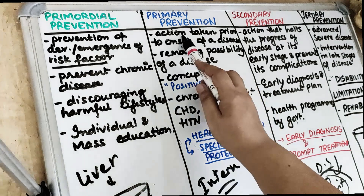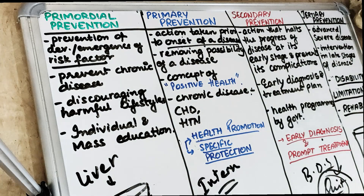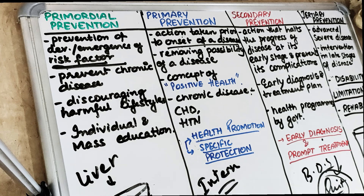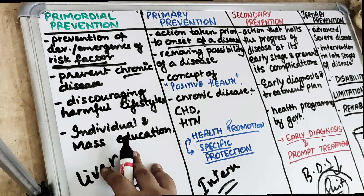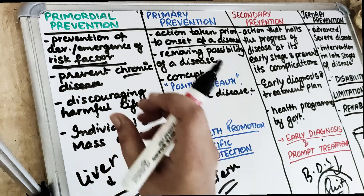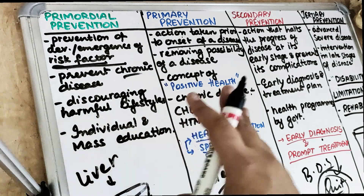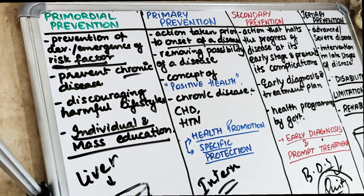Quarantine involves actions taken before the onset of a disease so that the disease won't develop. Actions taken before the risk factor emerges is the primordial level. Primordial prevention receives special attention in case of prevention of chronic diseases. Like smoking cessation programs and alcohol quit programs — efforts are directed toward discouraging children from adopting harmful lifestyles. The main intervention in primordial prevention is through individual level or mass education.